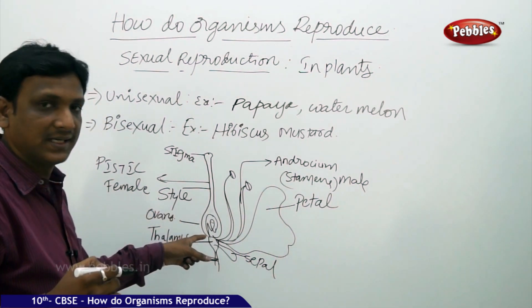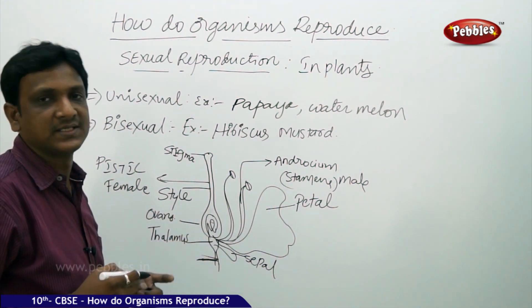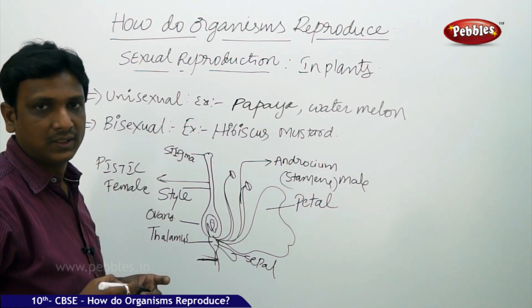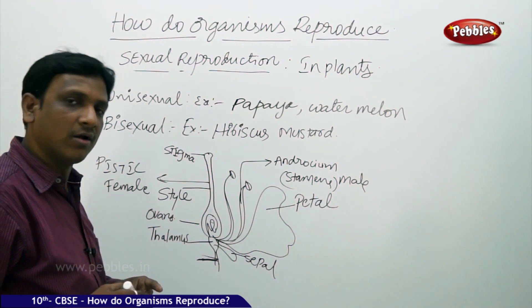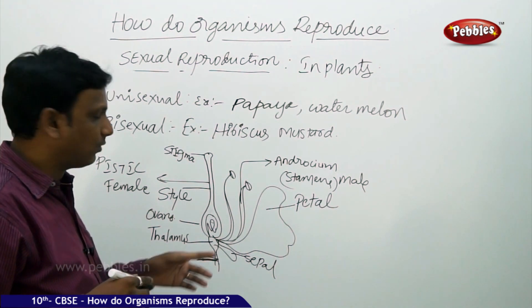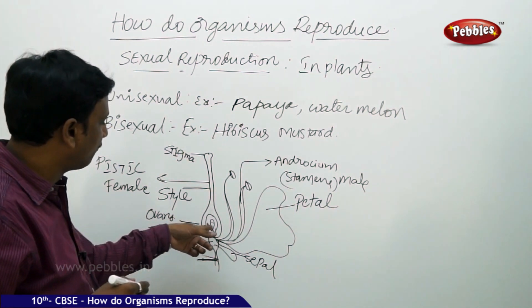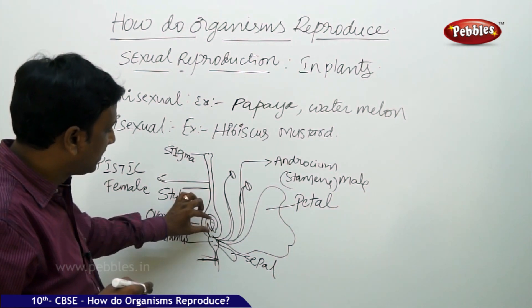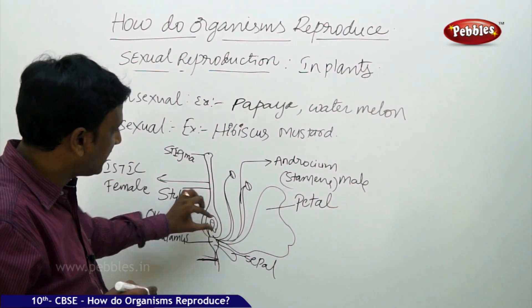Inside the ovary, female gametes are present. Inside the ovary there are ovules — one or many. The ovules consist of the female cells located inside them.